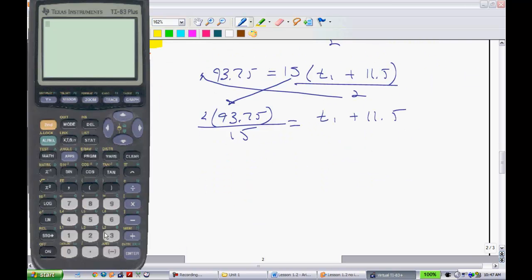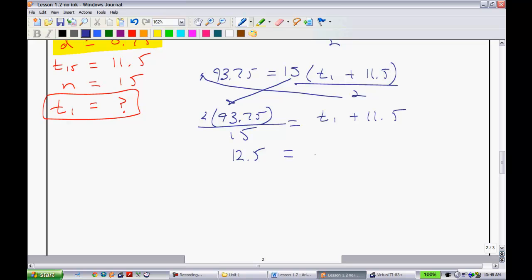Okay, so let's use our calculator here. We'll take 2, and we'll multiply it by 93.75, and divide by 15. And we have a solution of 12.5, which is equal to t1, plus 11.5. And now, to get t1 by itself, we're going to subtract 11.5, we get t1, or the first term is equal to 1.